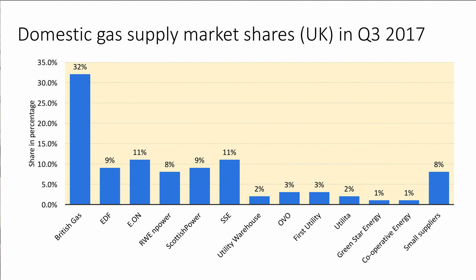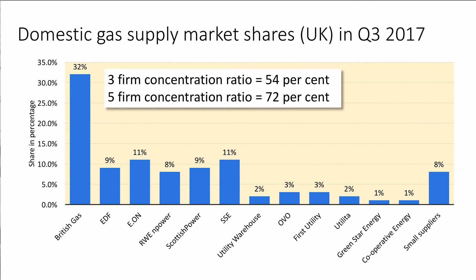For the UK domestic gas supply in Q3 2017, British Gas has nearly a third of the market. The big six businesses dominate significantly — it's clearly an oligopoly with a dominant British Gas. The three-firm concentration ratio is 54% and the five-firm concentration ratio is 72%, so on that rule of thumb this is an oligopoly. Also notable are challenger brands such as First Utility, Utilita, Green Star Energy, and Ovo, trying to break through and challenge the established major gas suppliers.